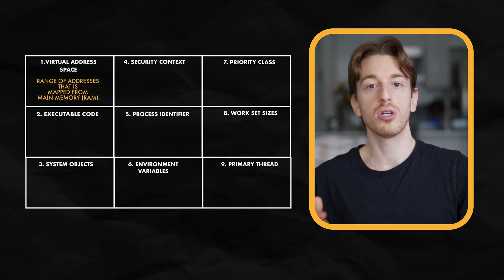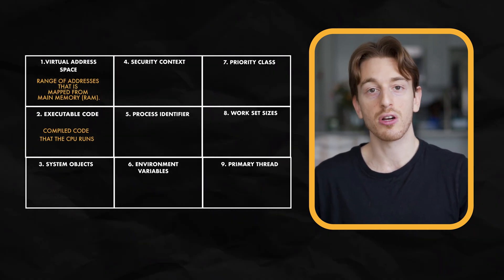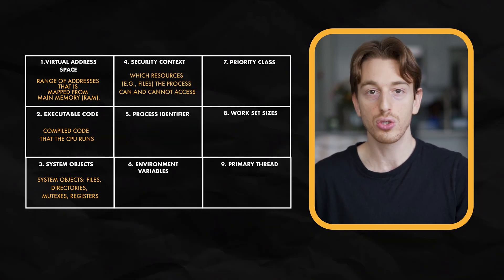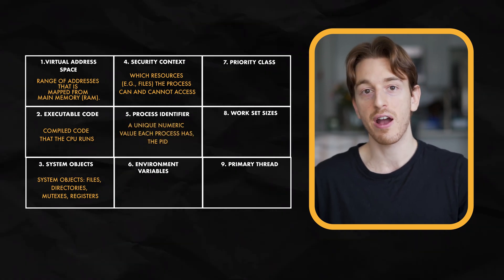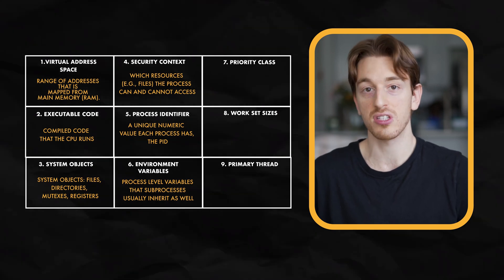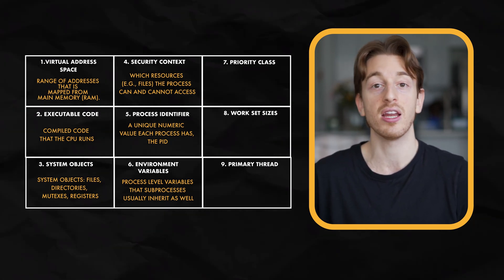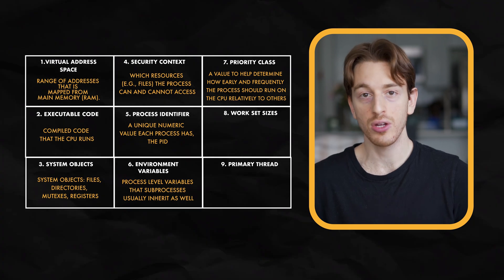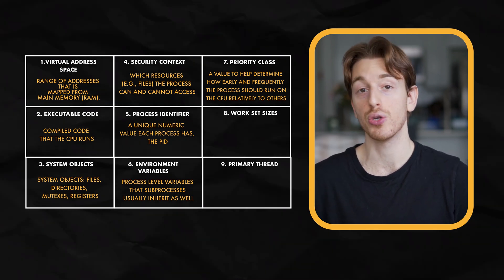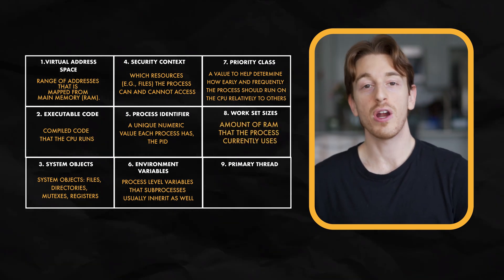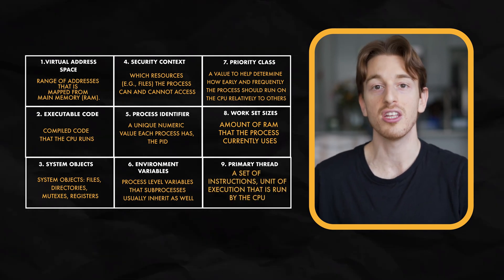Executable code is just the compiled code of the process the CPU is running. System objects are things like files and directories. A security context is a data structure that contains whatever resources the process can and cannot access. The process identifier, known as the PID, is a unique ID each process has. Environment variables are like global variables but on the process level, and depending on the operating system they will be inherited by any subprocess. A priority class defines how much CPU time should be allocated to a process and how the CPU should prioritize which process to execute next.